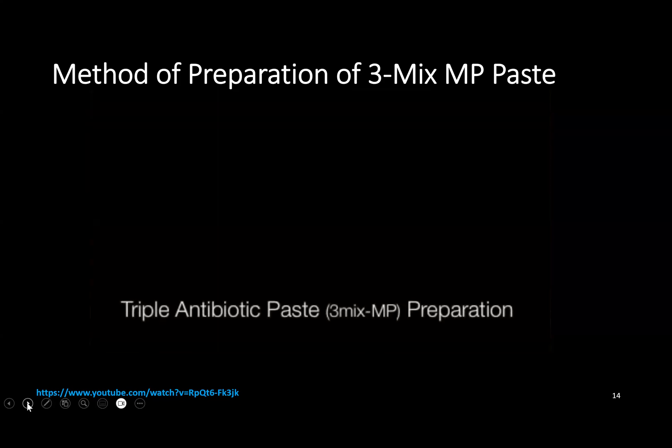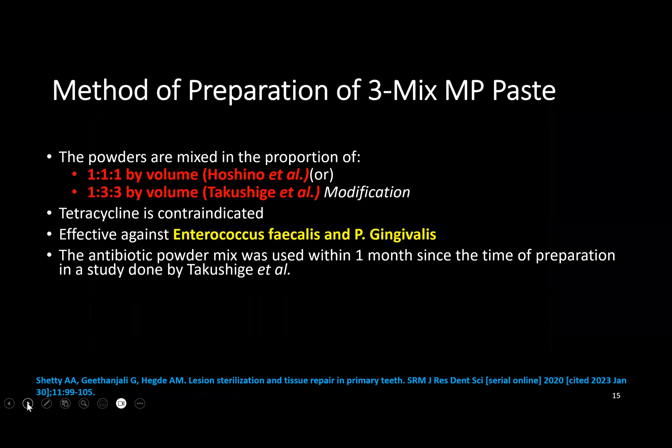This is how the powder and liquid are mixed. It is used in a ratio of one-to-one-to-one by Hoshino, or one-to-three-to-three by Takushiki in 1998 as a modification — either proportion can be used. I personally use one-to-one-to-one. Note that tetracycline is preferably not indicated due to tooth discoloration, though it is effective against Enterococcus faecalis and Porphyromonas gingivalis. The antibiotic powder mix should be used within one month of preparation, as per Takushiki's study.